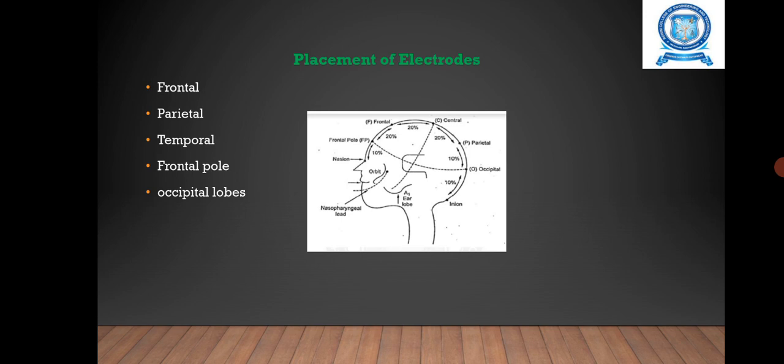Next we are going to see the placement of electrodes. The brain waves are the summation of neural depolarization in the brain due to stimuli. Totally here we have five sensors: frontal, parietal, temporal, frontal pole, and occipital lobes.